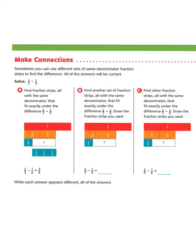Now let's make some connections to what we just learned. Sometimes you can use different sets of same-denominator fraction strips to find the difference, and all the answers will be correct. Let's look at part A. Instead of using fraction strips, we are simply going to subtract: 2 thirds minus 1 sixth equals.